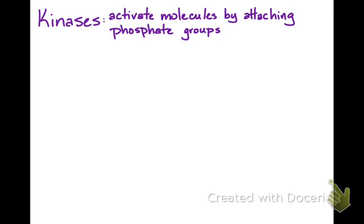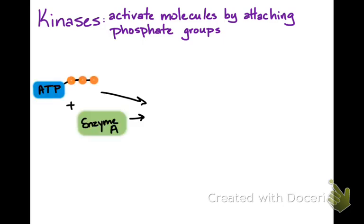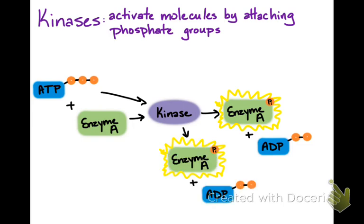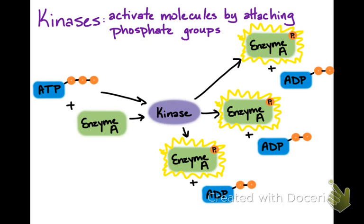Kinases are a large group of enzymes that can change the shape of other molecules or enzymes by attaching a phosphate group to them. Phosphates are highly negatively charged, so they can really change the shape of a molecule they're bound to. For example, if you have enzyme A and an ATP molecule, a kinase can phosphorylate enzyme A to activate it, producing an ADP. That kinase can facilitate this reaction over and over, activating many enzyme A molecules, which in turn can go on to facilitate other reactions once activated.